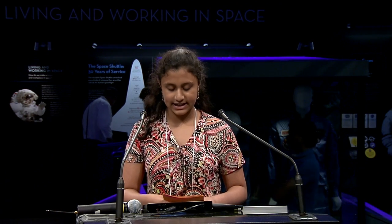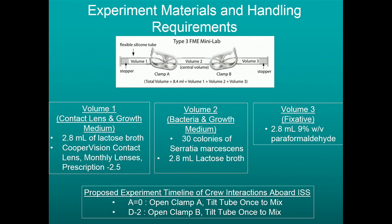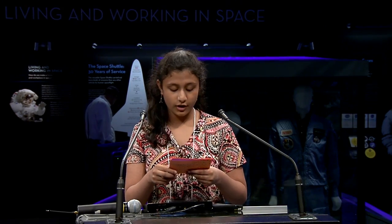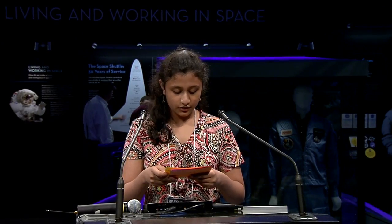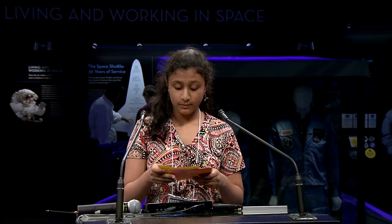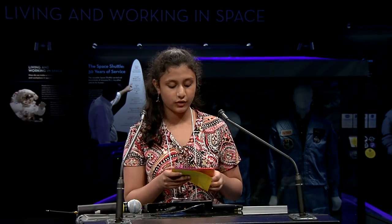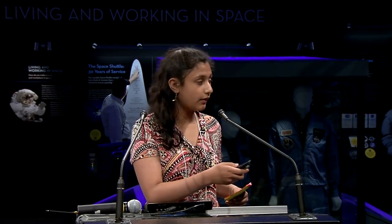At the first opportunity upon arrival at the ISS, clamp A will be opened, and though it was originally described as tilting the tube, we got feedback and it's actually going to be gently shaken to expose the lens to the bacteria. At the last opportunity before departure, clamp B will be opened to release the fixative to stop any further biofilm growth upon re-entry to a gravity environment.